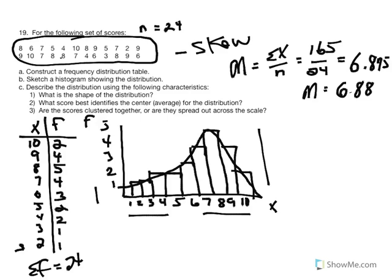Another way to think of the center is the median — the middle score. With 24 scores, half of that is 12. The x value representing the 12th score is the center. Because we have an even number of scores, the 12th and 13th scores together tell us the center of the distribution.